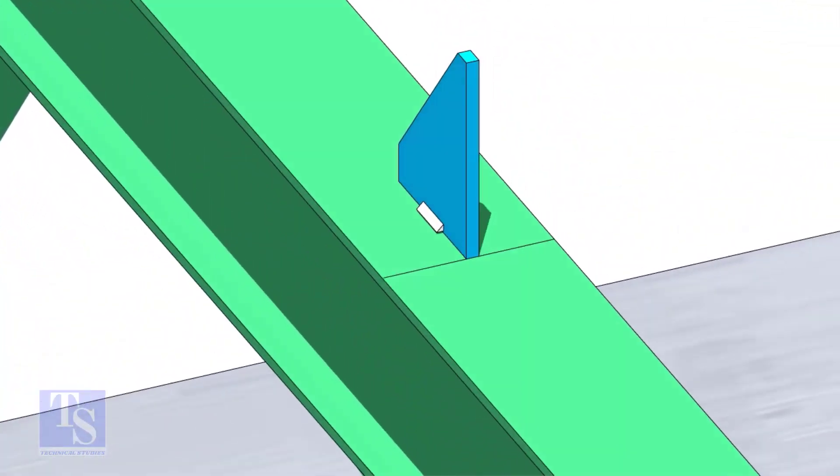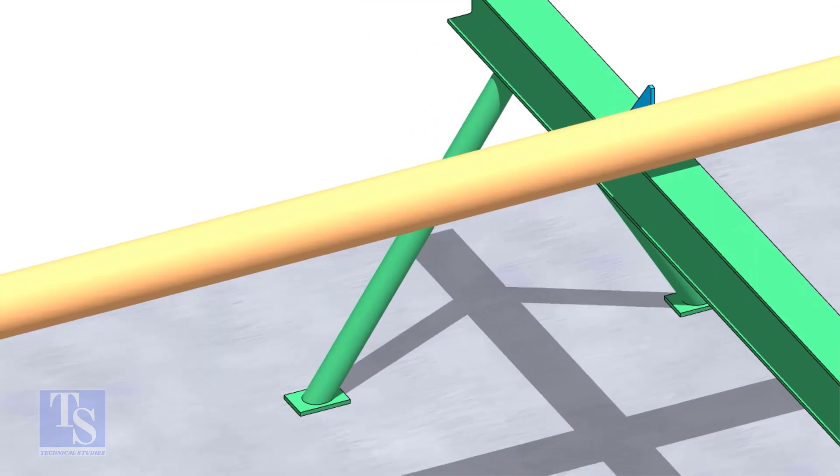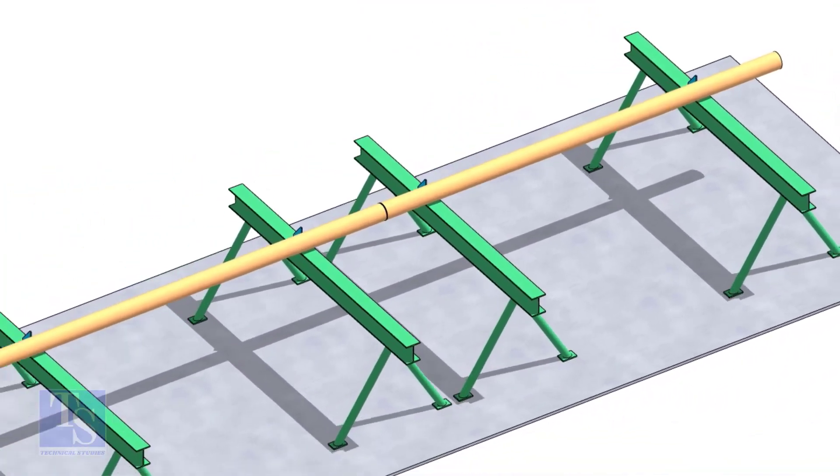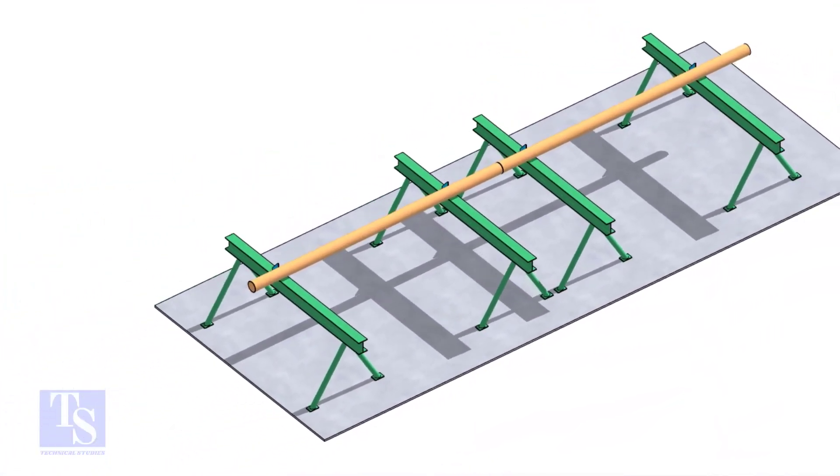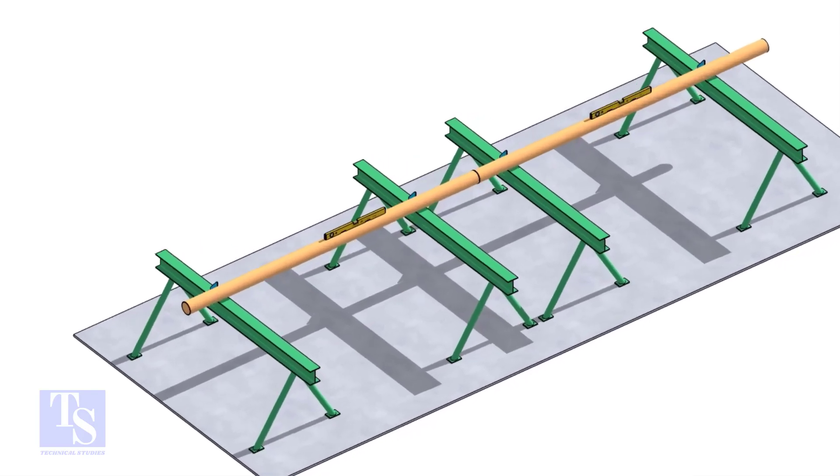Put the pipes on the stands, touching the stopper plates, as shown. The joint shall be in between the supports. Now the pipes are already straight, horizontally and vertically.